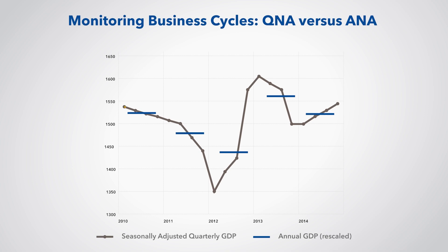The quarterly data showed that the economy was declining from the first quarter of 2010 until the first quarter of 2012, after which it moved up until the first quarter of 2013. Then GDP turned down for the next three quarters, and finally began growing again in the last three quarters of 2014. In contrast, the annual data show the economy contracting from 2010 to 2012, even though the QNA showed that GDP had turned up after the first quarter of 2012.